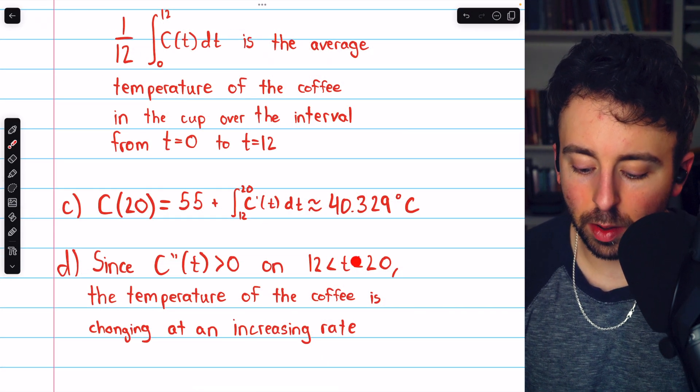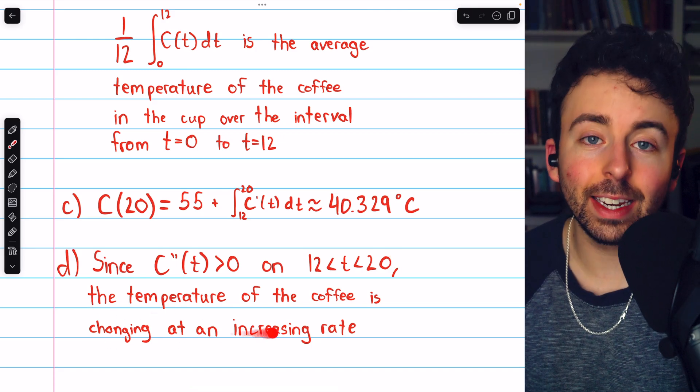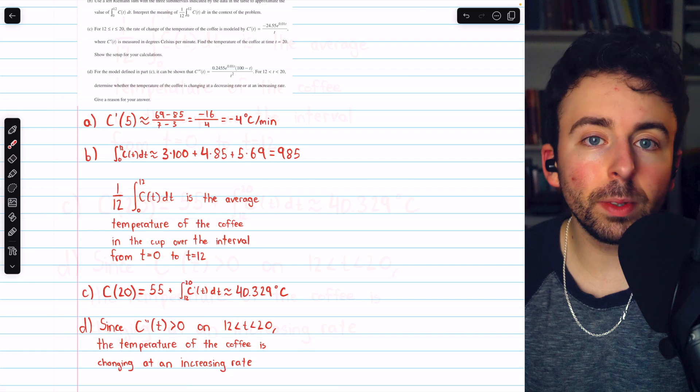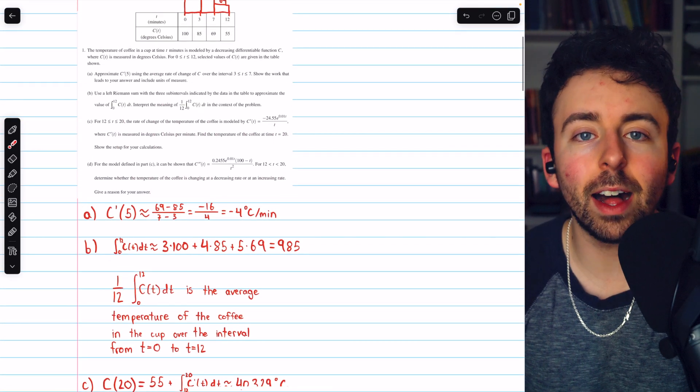So since the second derivative is positive on the given interval, the temperature of the coffee is changing at an increasing rate. And that completes our solution to free response question 1 from the 2024 AP Calc AB exam.